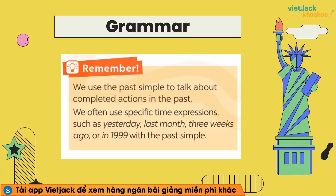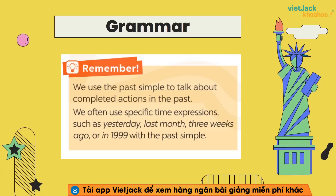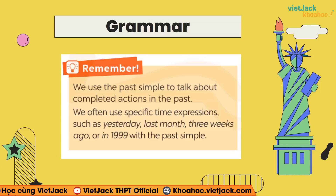Hoặc là mình sẽ có cách diễn đạt là [số lượng] ago — ví dụ 3 weeks ago (3 tuần trước), 2 days ago (2 ngày trước), 5 months ago (5 tháng trước), 4 years ago (4 năm trước). Ago thì sẽ phải đặt sau những cái cụm chỉ thời gian. Last thì sẽ cộng với cả một danh từ chỉ thời gian. Còn ago thì sẽ đứng sau những cái cụm số lượng cộng với cả danh từ chỉ thời gian. Và cuối cùng là in cộng với cả một cái năm trong quá khứ.